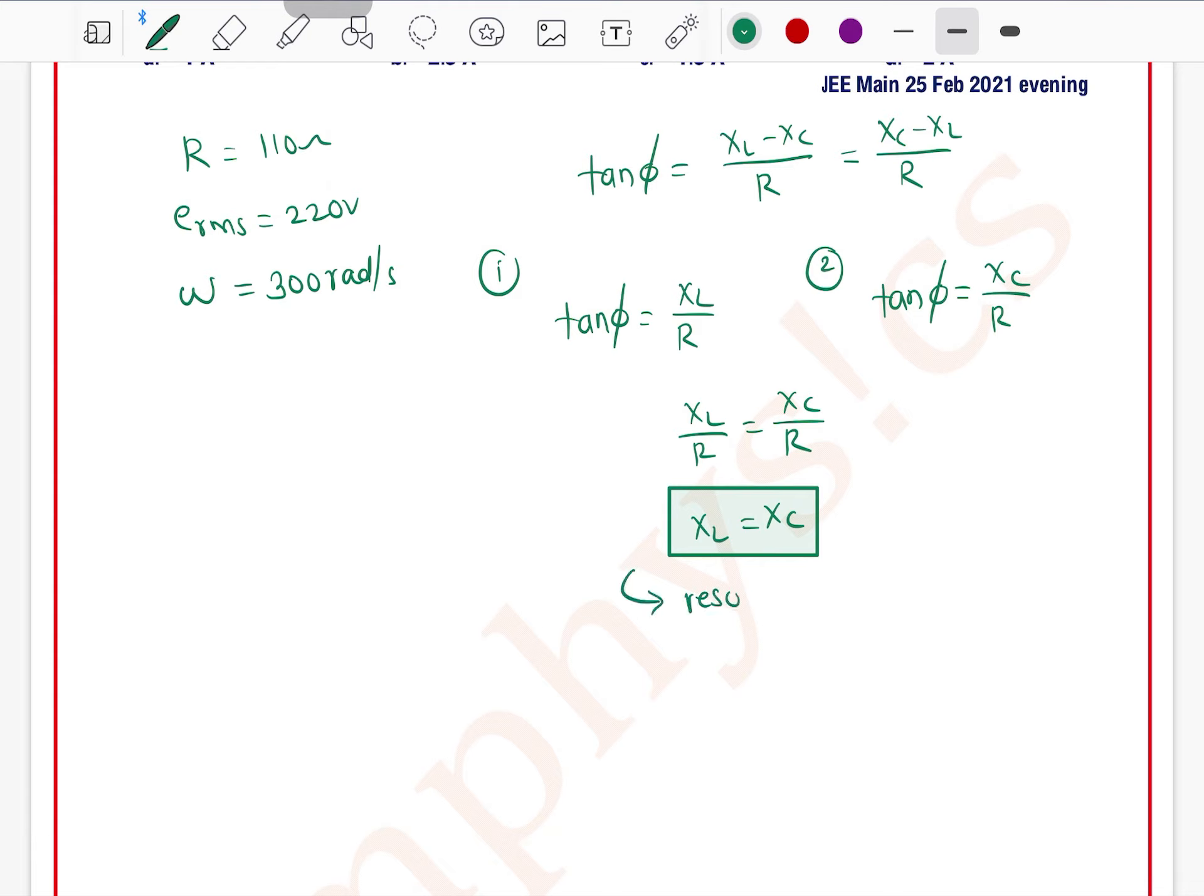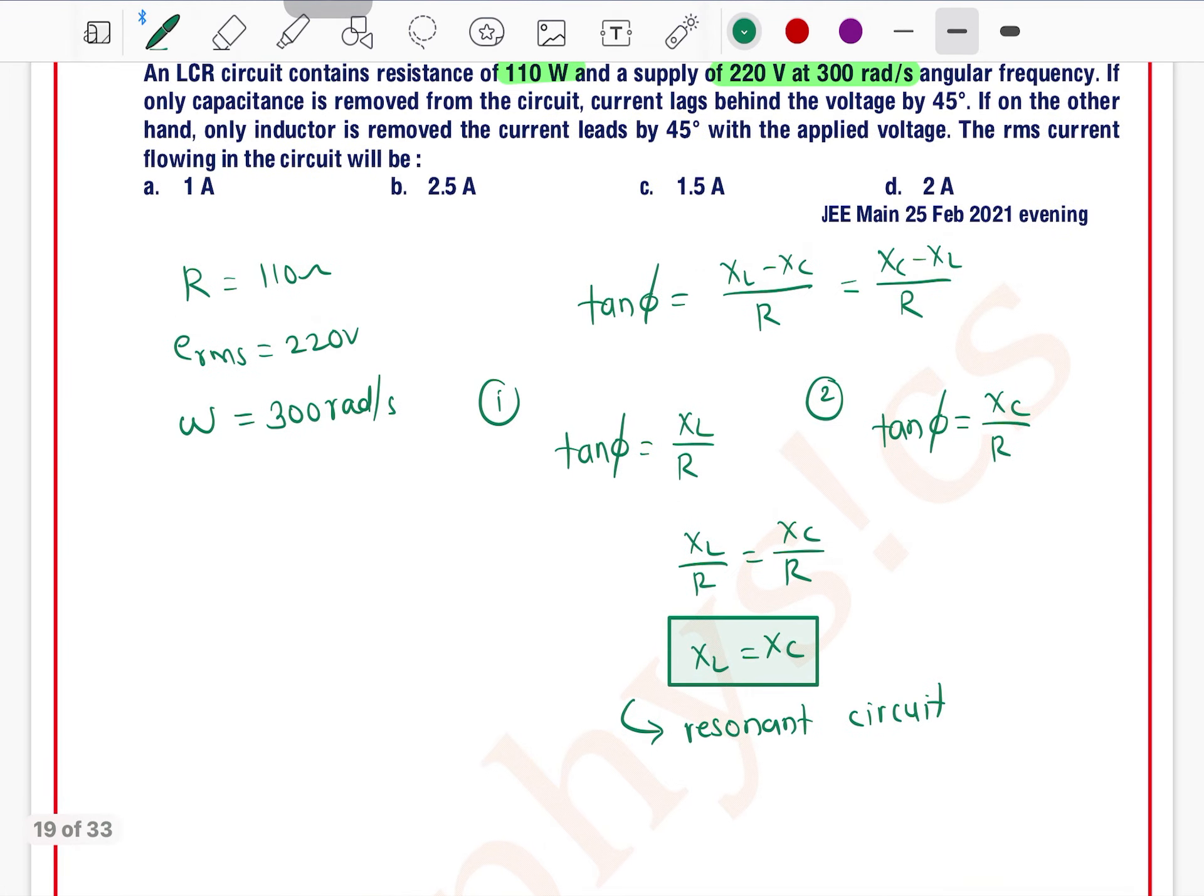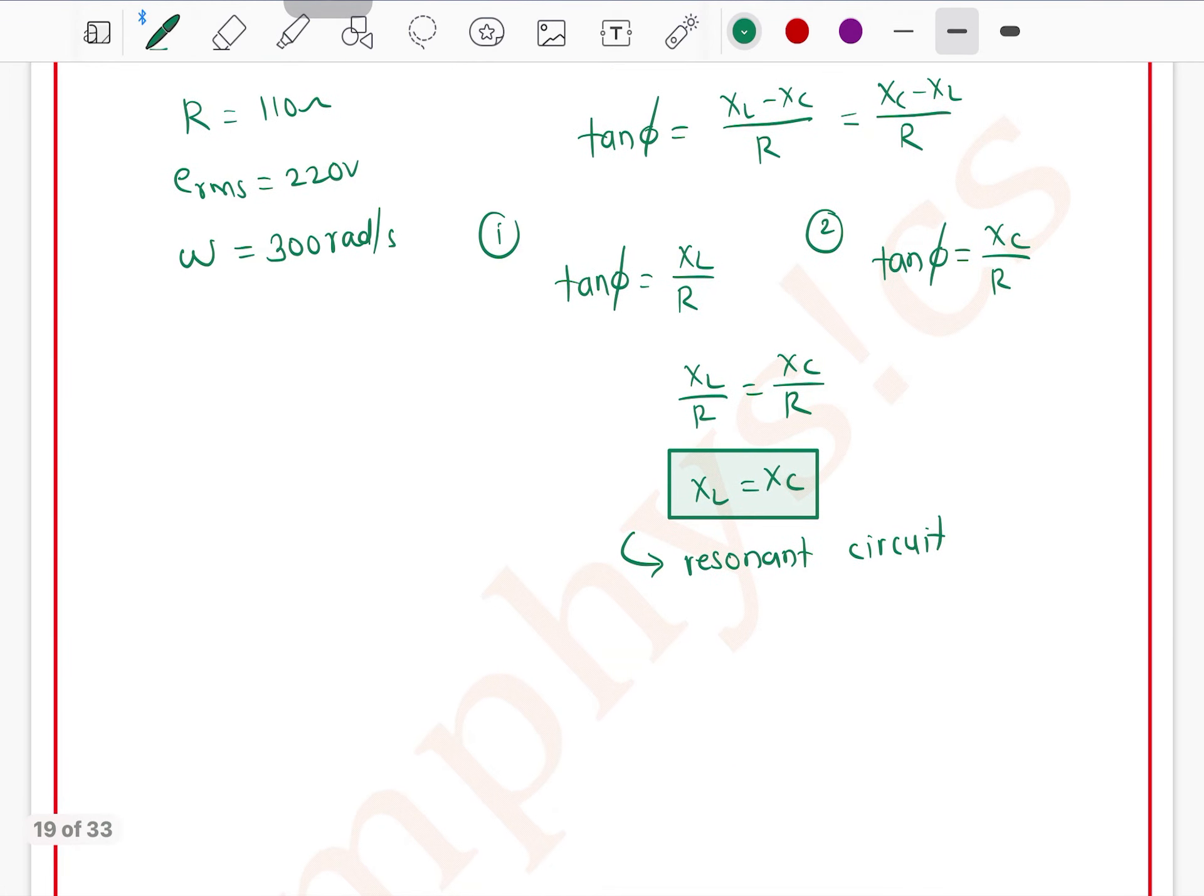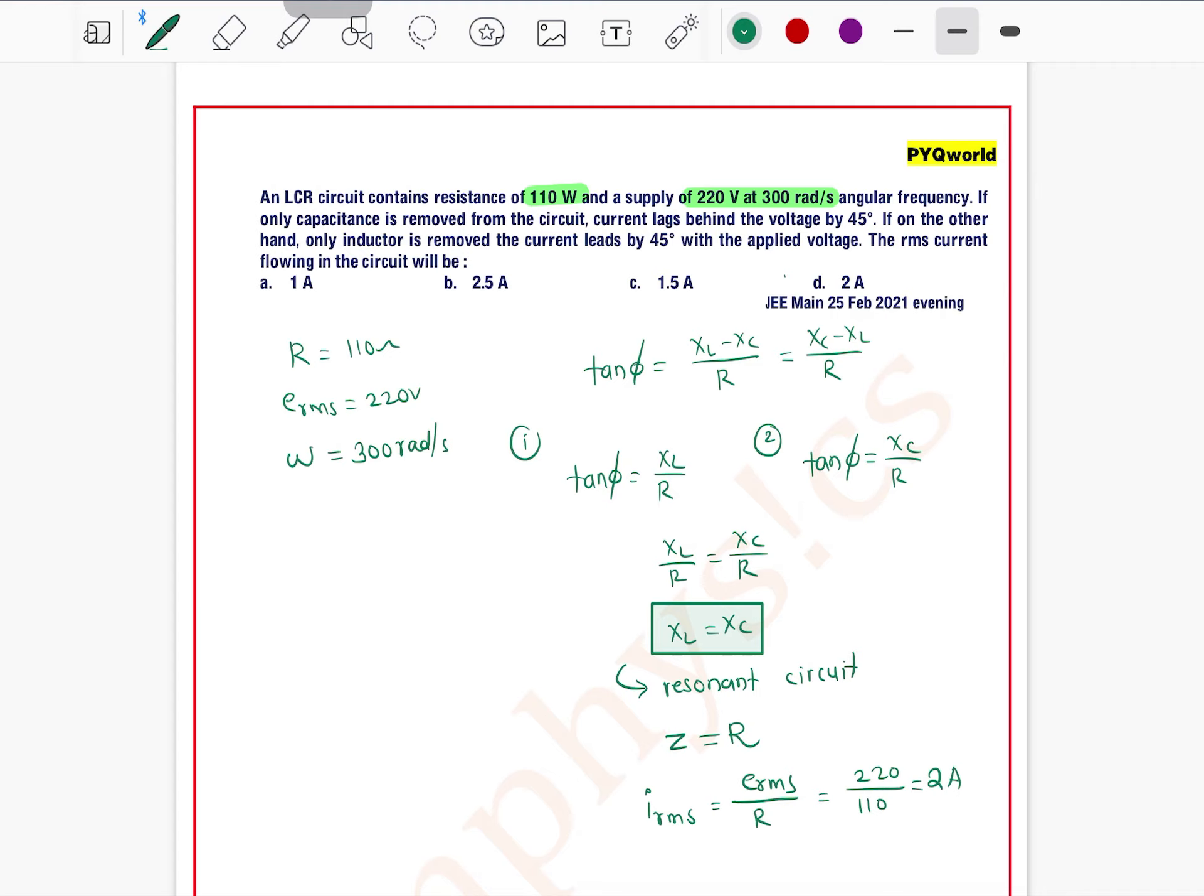And XL is equal to XC, it's meaning this circuit is a resonant circuit. So in this circuit, we know that Z is equal to R, which is equal to R. So 2 ampere means option D, option D is the correct one, right.